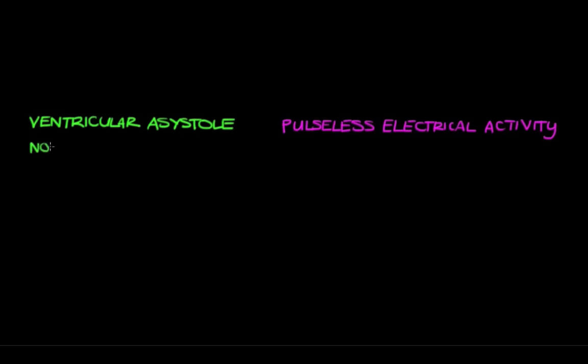So in ventricular asystole, there's no electrical activity in the heart. If there's no electrical activity, that means that the ventricle walls aren't contracting. And that's what asystole basically means. A means no, and systole implies ventricular contractions. So no ventricular contractions.